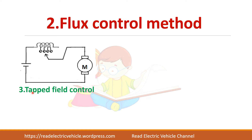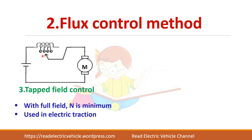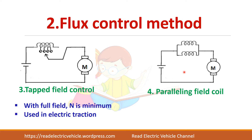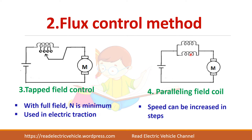Another method is called the tapped field control method. This is like our auto transformer — you have tappings and you can connect whatever field winding you want. Depending upon that, your field current will vary so that the speed will also change. When you have full field, it means more flux is there and the speed will be minimum.